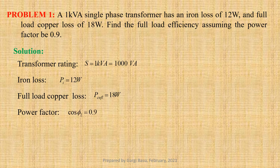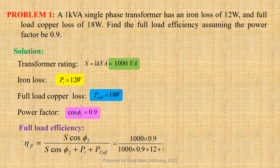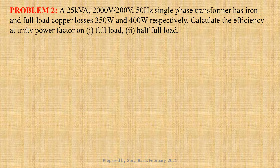We know that the expression for full load efficiency: ETA_FL equals to S cos phi 2 divided by S cos phi 2 plus P_I plus P_copper_FL, that is equal to 1000 into 0.9 divided by 1000 into 0.9 plus 12 plus 18, that gives us 96.77 percent.